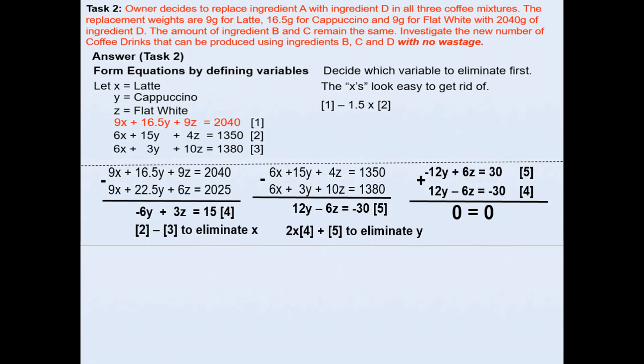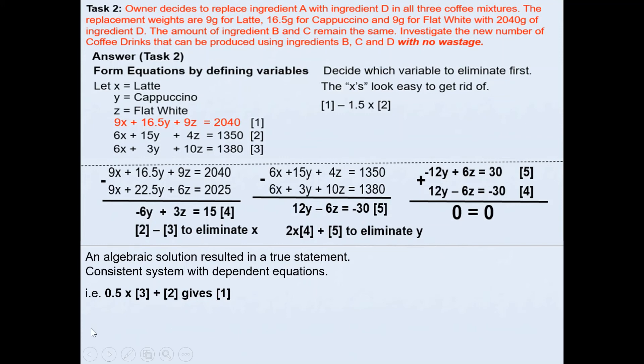We have ended up with 0 = 0. Now for merit, you need to interpret what this means. This is telling us that an algebraic solution has resulted in a true statement because 0 = 0 is true. That means it is a consistent system with dependent equations. In other words, if I multiplied equation 3 by 0.5 and added it to equation 2, this will give me equation 1. So that's dependent equations.